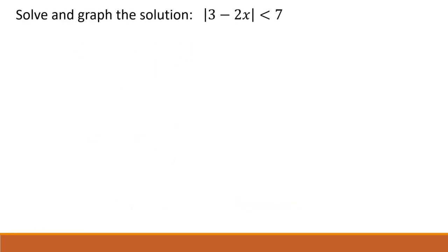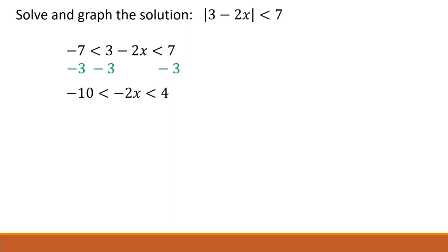Now let's solve and graph the solution to the absolute value of 3 minus 2x is less than 7. Like the last problem, this tells us we're looking at something that is a distance within 7 units of 0. So 3 minus 2x has to be between negative 7 and positive 7. To isolate x in the middle, we'll subtract 3 from all three parts, which leads us to negative 10 is less than negative 2x, which is less than 4.